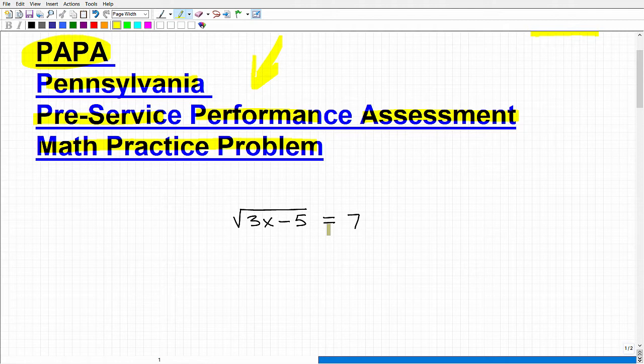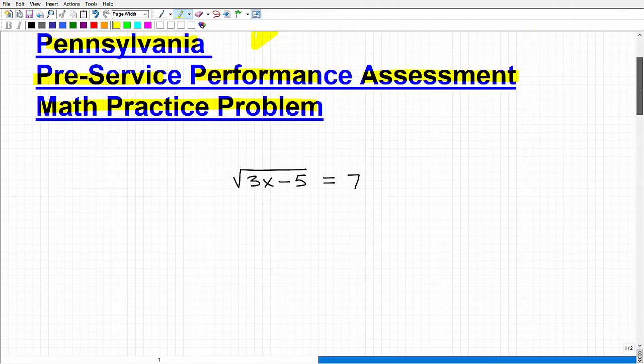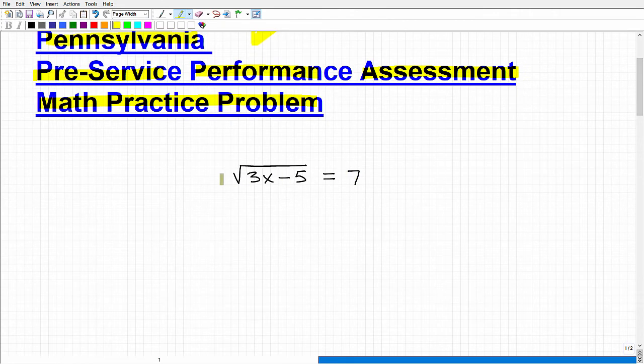Okay, so hopefully you're able to do this without any problem. This is what we call a radical equation. And this is pretty standard stuff from high school level, ninth grade algebra 1. Okay, so this is not advanced math by any stretch.